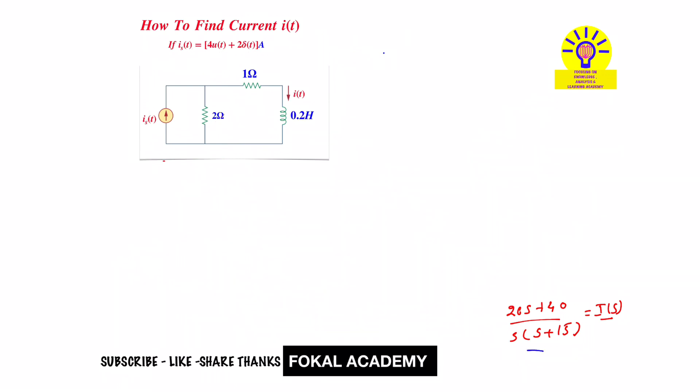20 S plus 40 upon S times S plus 15 can be written as A by S plus B by S plus 15, because in the denominator we have two factors. One is S, another is S plus 15. Now take LCM here. It becomes A times S plus 15 plus B times S upon S times S plus 15.